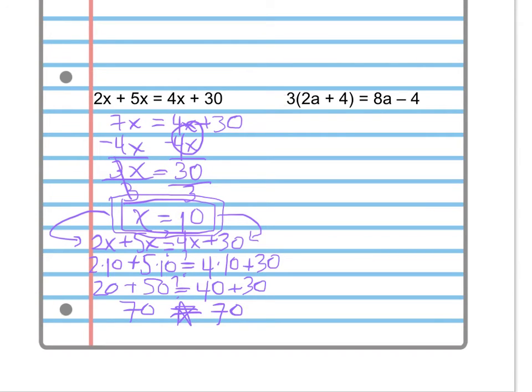On this next problem over here, all we have to do is, for those of you that might have problems with it, just remember that we have to distribute the 3 inside the parentheses to each term. So this is what we were doing last week with the distributive property. So 3 times 2a plus 3 times 4 equals 8a minus 4. And our next step we multiply through: 3 times 2 times a is 6a plus 3 times 4 is 12 equals 8a minus 4.